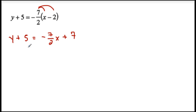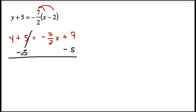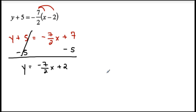I distributed first. Now I'm almost in slope intercept form — I need to subtract 5 from both sides. Solving for y, my 5's simplify, so I have y equals negative 7 over 2 x plus 2, since 7 minus 5 is 2. Now we have slope intercept form.